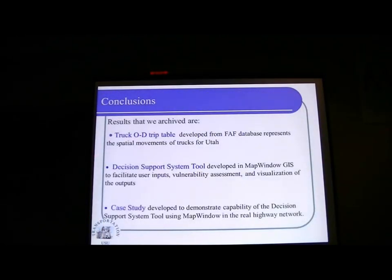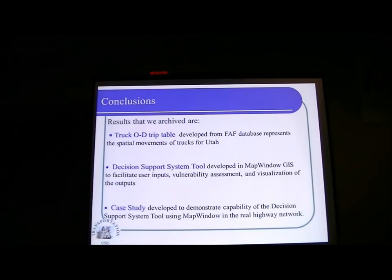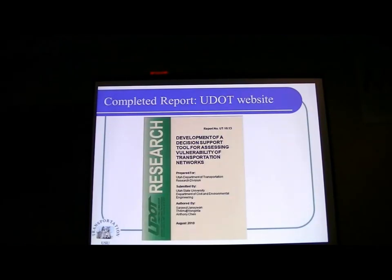Moving to the conclusion, what we achieved with this project is three things. First, we developed the travel demand table, especially for freight use. Most importantly, we developed a decision support system tool built in GIS. This GIS map can facilitate user input, vulnerability assessment, and visualization of the outputs. We also developed a case study to demonstrate the capability of the decision support system using the real highway network. The complete report is available on the website for anyone interested in the details.